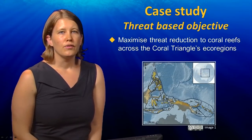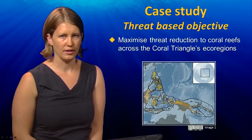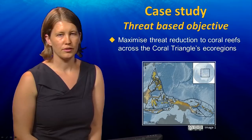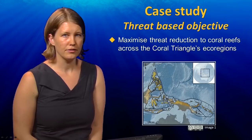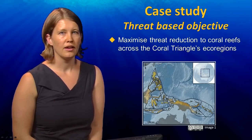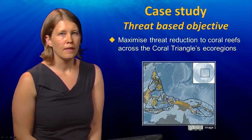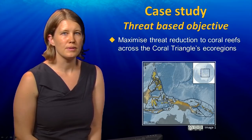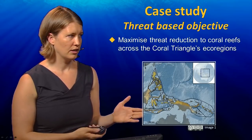First, an example of a threat-based objective. This study was done across several ecoregions in the Coral Triangle, threatened by both land and sea-based human activities. The idea was to develop an approach that can inform investment decisions across the large region. This region and many others are part of large multilateral conservation initiatives faced with deciding how and where to spend money for conservation. The objective was to maximize threat reduction to coral reefs through investment in land and sea-based conservation actions across the ecoregions shown here in the black polygons.